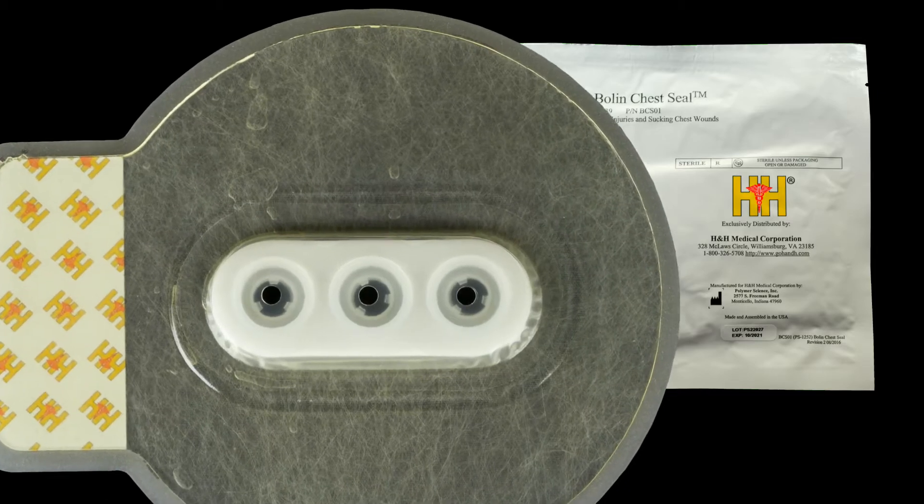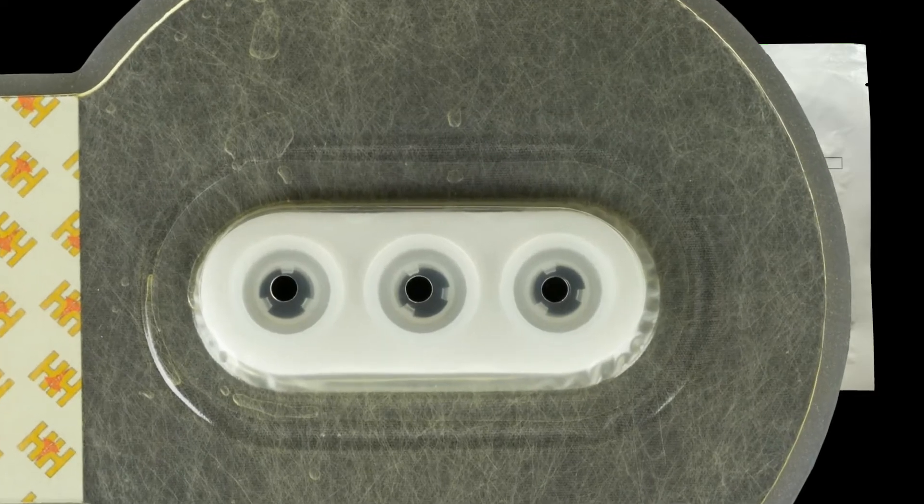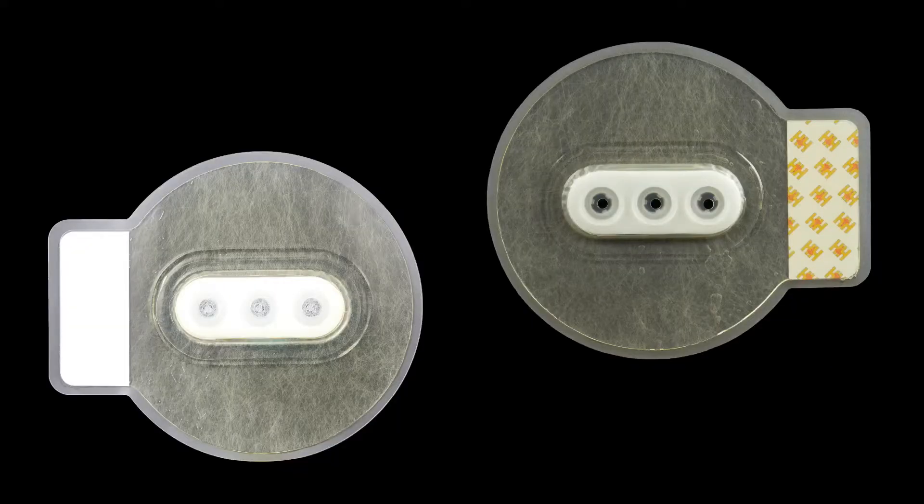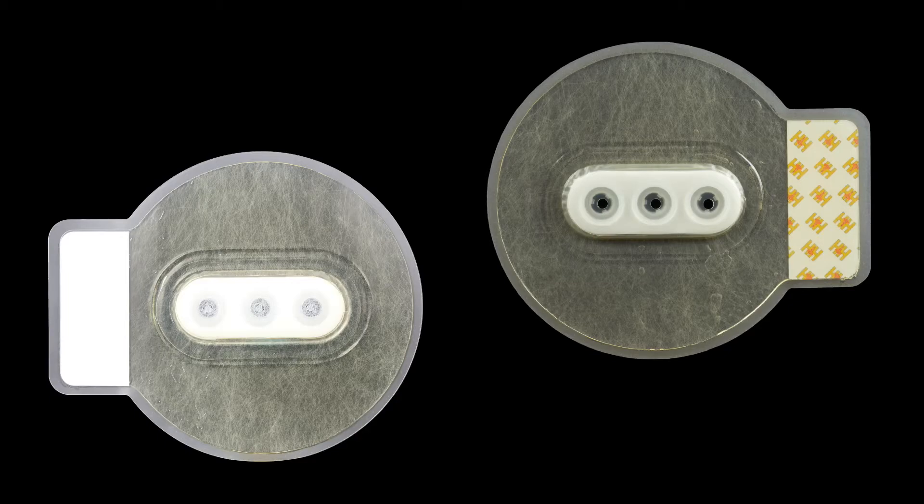The patented one-way triple valve design allows air and blood to escape while maintaining occlusion of the wound site. The Bolin Chest Seal is 6 inches in diameter, allowing it to cover even large wounds.